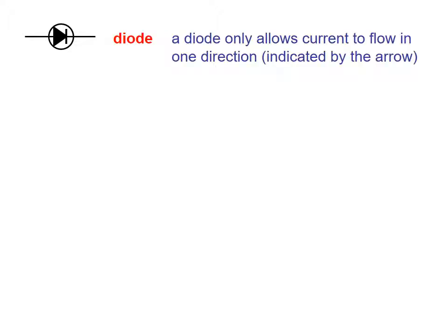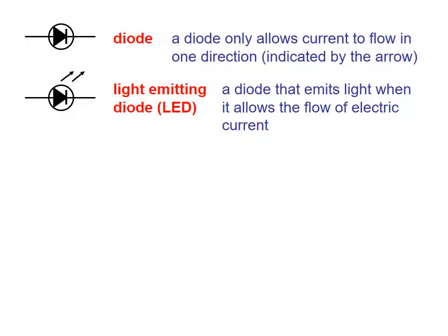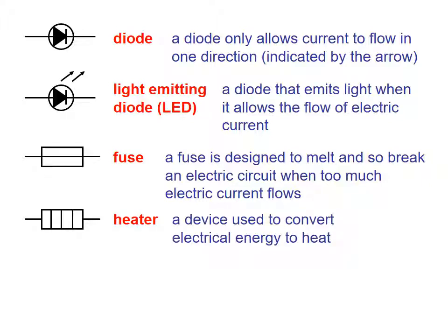A diode only allows current to flow in one direction, which is important for AC currents. A light-emitting diode (LED) emits light only when current flows in the correct direction. A fuse is designed to melt and break the circuit if the current gets too high. A heater converts electrical energy into heat. Those are all the symbols you need to know.